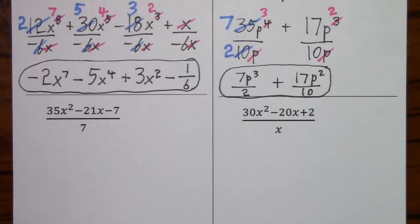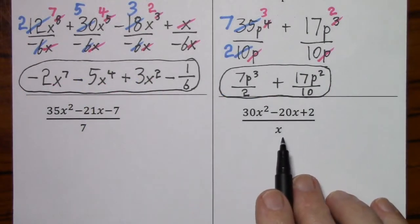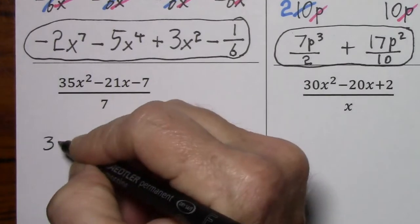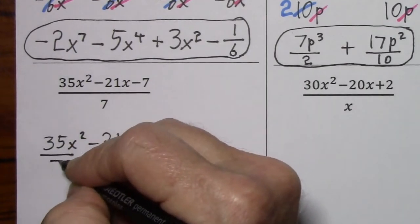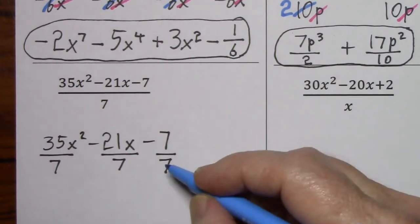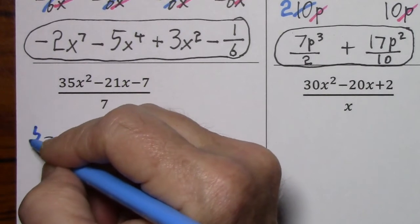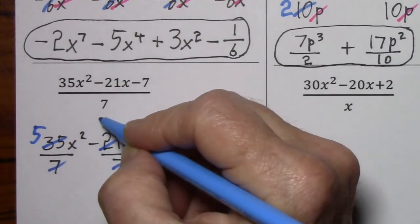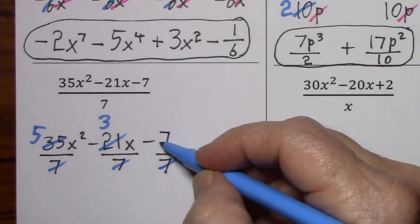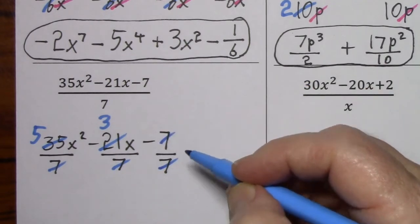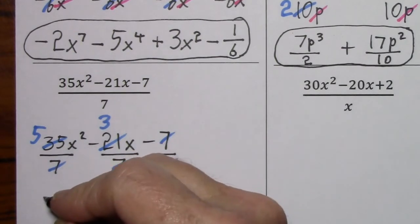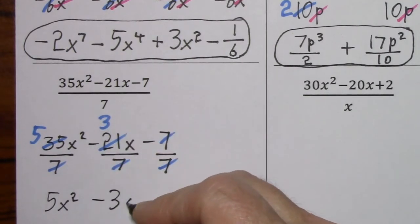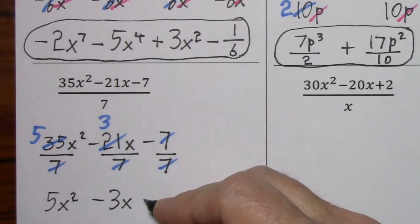With our last two examples on this page, we just have a 7 and then an x in the denominators. Rewriting the numerator: divide by 7, divide by 7. The x — no way to simplify. Divide by 7, divide by 7, and you basically get a 1. So what's left standing: 5x squared, negative 3x, and again you have to put a negative 1 here.